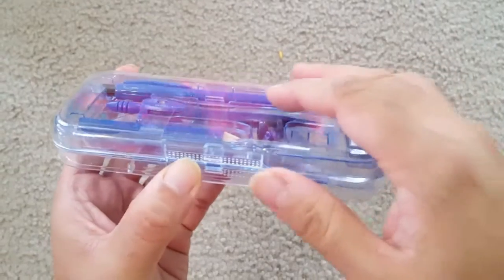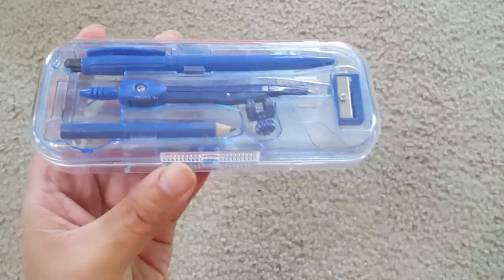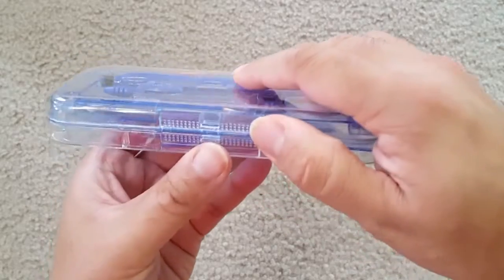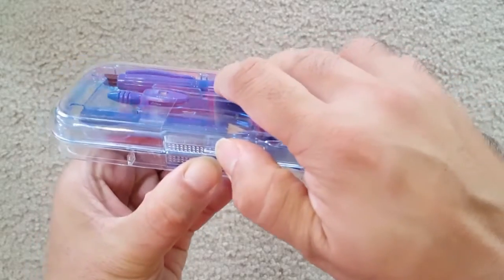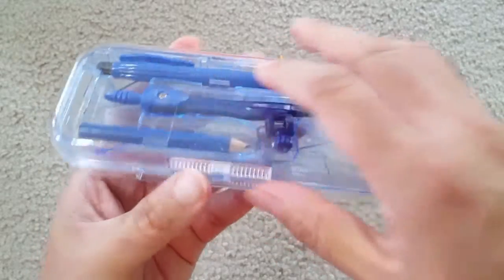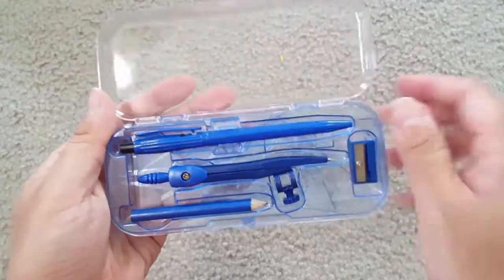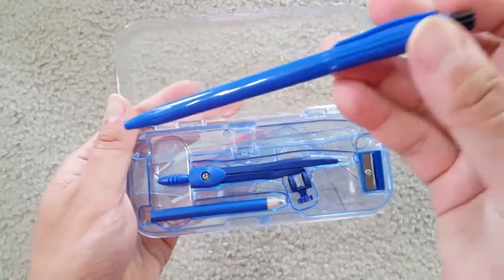This is an ergonomical design compass head, and this box is a two-sided box. On the top side they have different tools like a compass, pen, pencil, and a sharpener. I will show you.